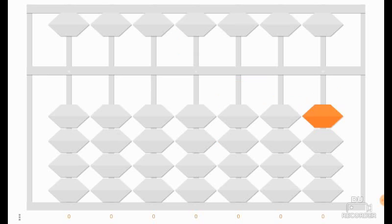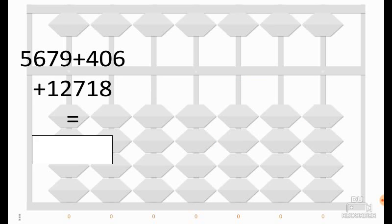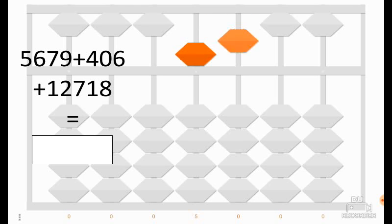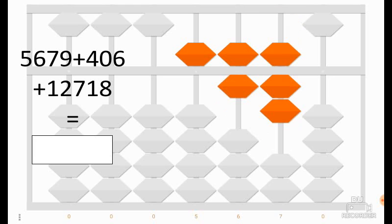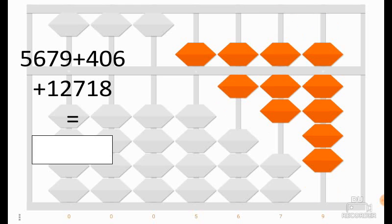The last example uses 3 numbers. We would like to add 5679 plus 406 plus 12708. We write the first number on the soroban: 5679. Then we would like to add 406.